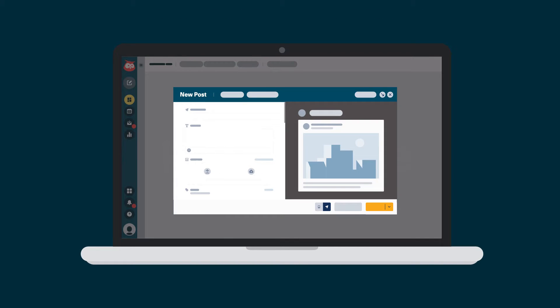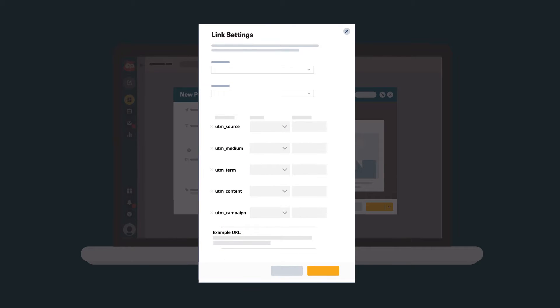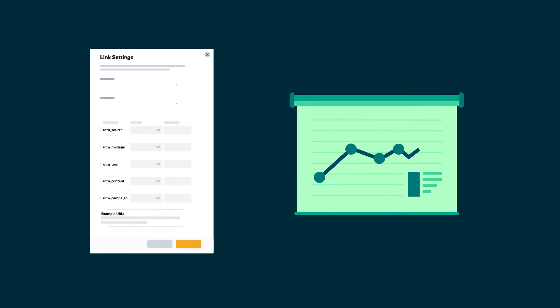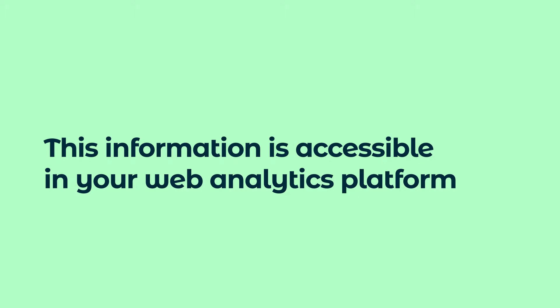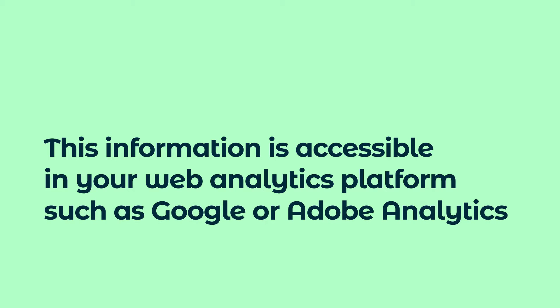When publishing through the Hootsuite Composer, advanced link settings can be applied to track how your social messages drive website visits, conversions, and campaign engagement. This information is accessible in your web analytics platform, such as Google or Adobe Analytics.